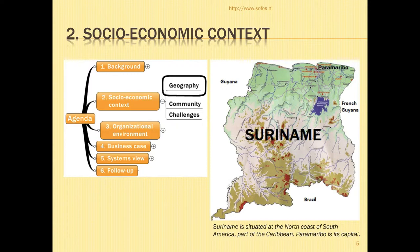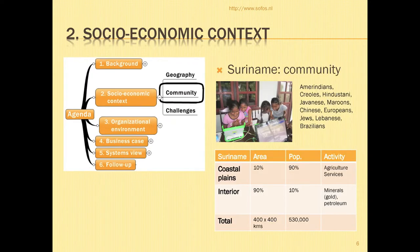The population is very mixed — 500,000 people in total from various origins, about seven different groups you can distinguish. But they are all mixed, and most of them are living in the capital, Paramaribo. And that is where the FabLab is.